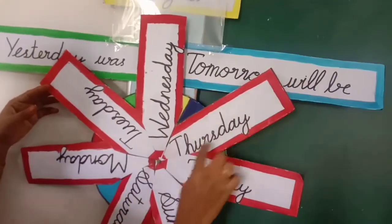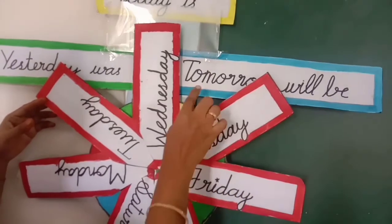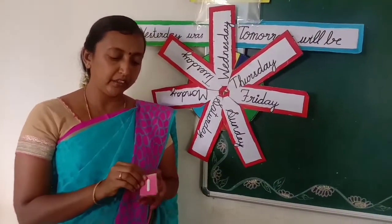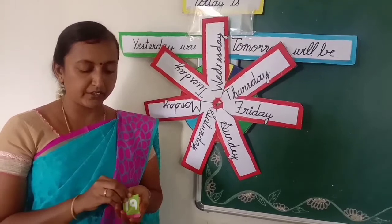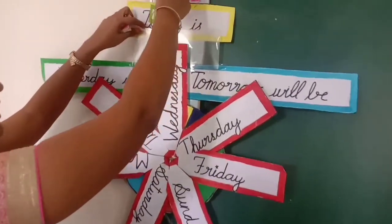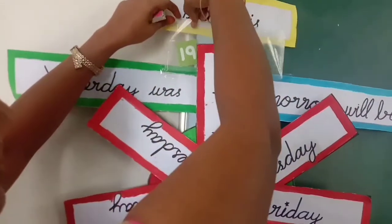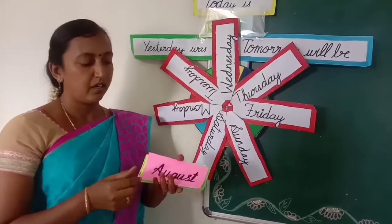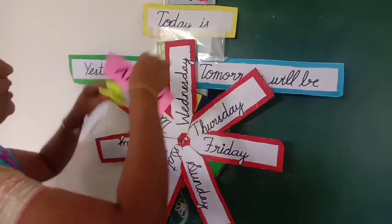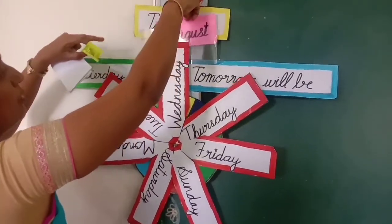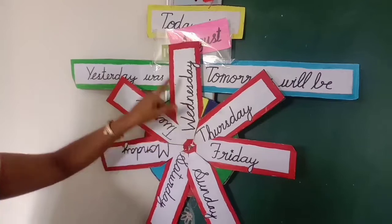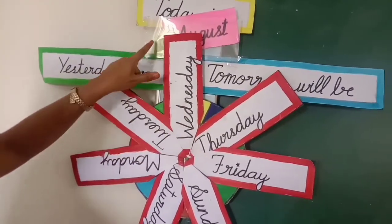And tomorrow will be? Very good. Thursday. Tomorrow will be Thursday. What is the day? Can you find? Today is 19. Today date is 19. Put it into the pouch. Nice. What is the name of the month? August. Put it into the pouch. August. Today is Wednesday, 19th August.